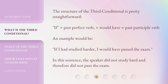The structure of the Third Conditional is pretty straightforward: 'If' plus past perfect verb, plus 'would have' plus past participle verb. An example would be: 'If I had studied harder, I would have passed the exam.' In this sentence, the speaker did not study hard and therefore did not pass the exam.